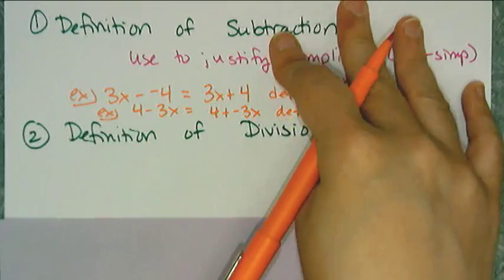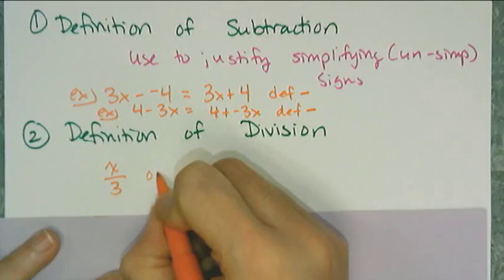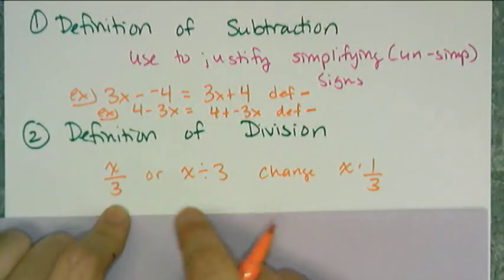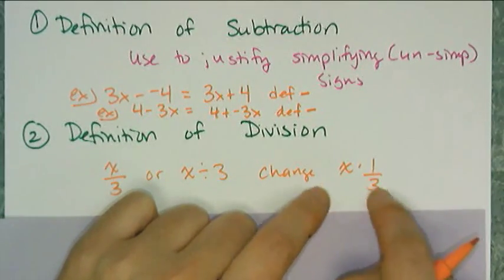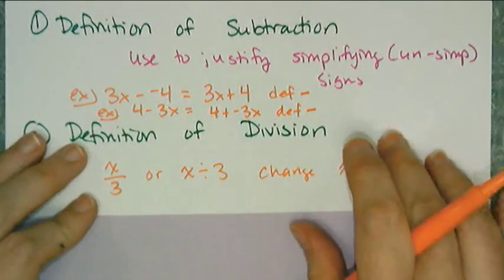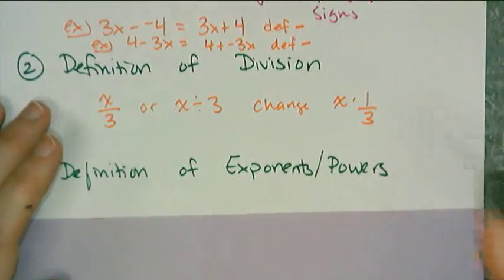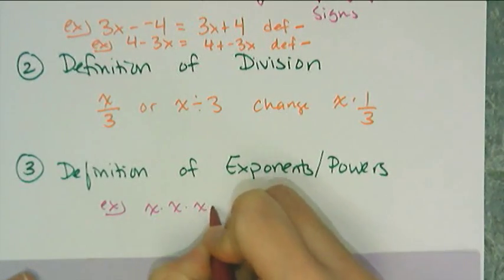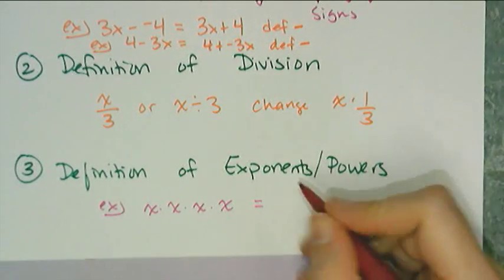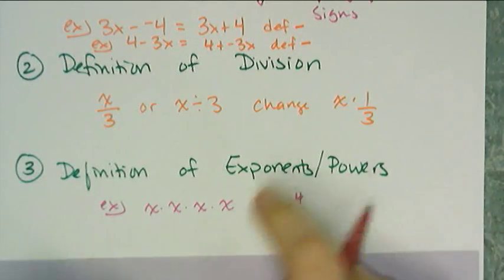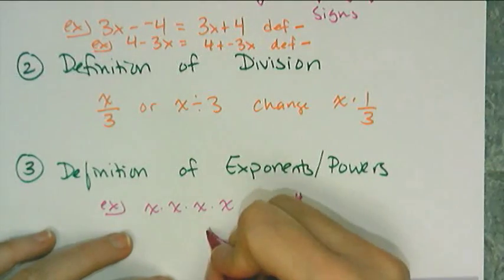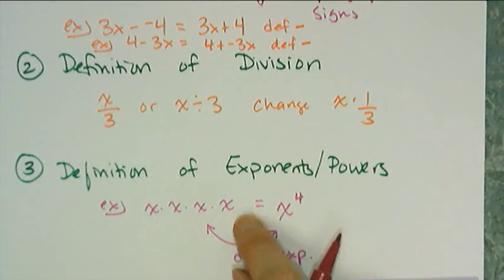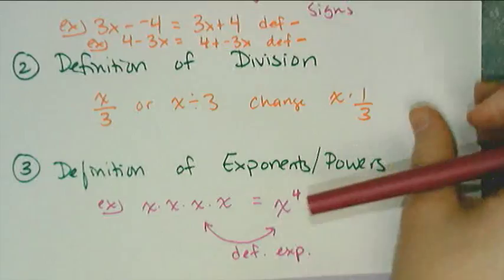The definition of division: when I have x ÷ 3 written with a vinculum or an obelisk, I change it to x times one-third, converting division into multiplication by the reciprocal. The definition of exponents, or powers, is used whenever you write something as an exponent. x·x·x·x can be written as x⁴, and you can go either direction — expanding into the definition or combining into the exponent. Whenever you do that, you're using the definition of exponents.